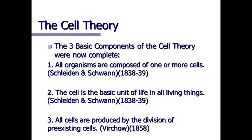Later, Rudolf Virchow and Robert Remak, together around 1860, argued that the cell is not a novel structure — meaning it can arise from pre-existing cells. They presented examples involving meiosis and mitosis, in which the division and multiplication of cells takes place.